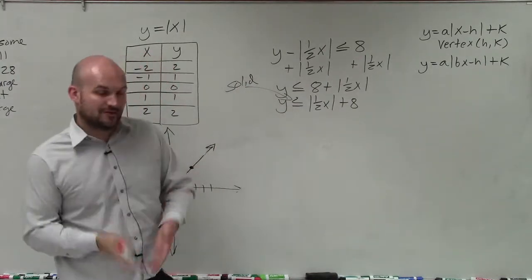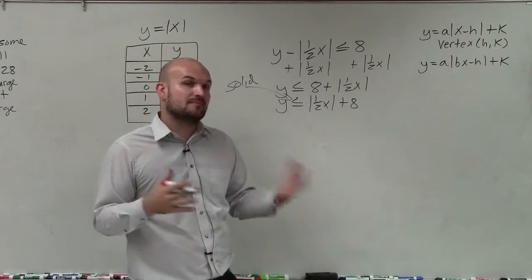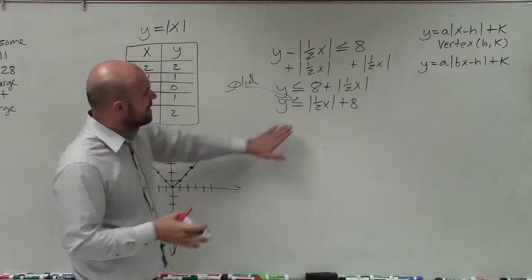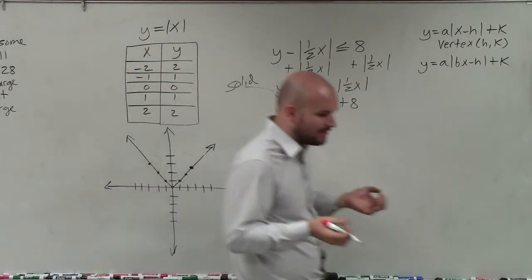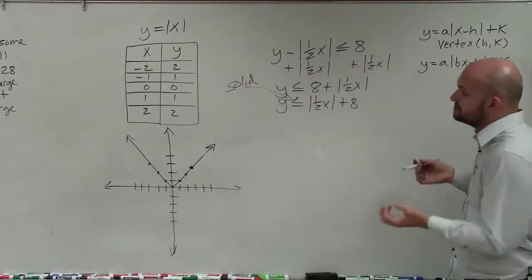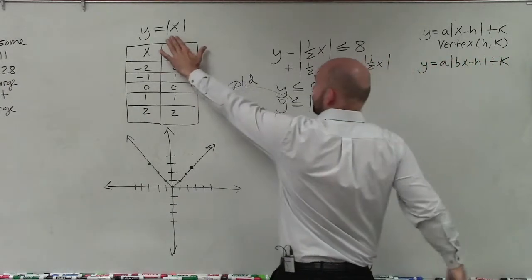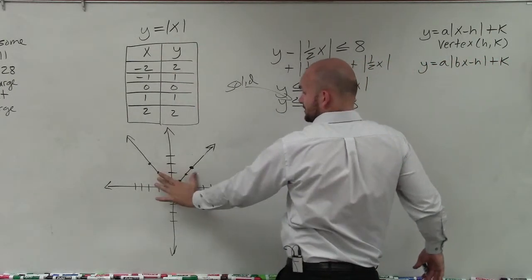So I can just graph it with solid line, and then I'll determine my shading at the very end. Now I need to graph this, so I need to identify what are my transformations? What is happening to my graph? Because here's the parent graph, y equals absolute value of x. That's what it looks like.